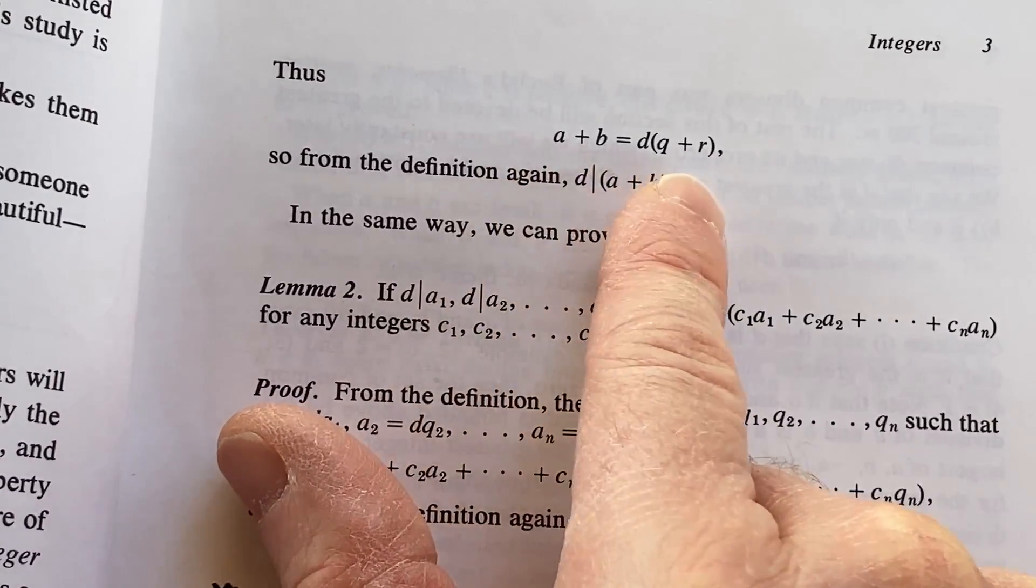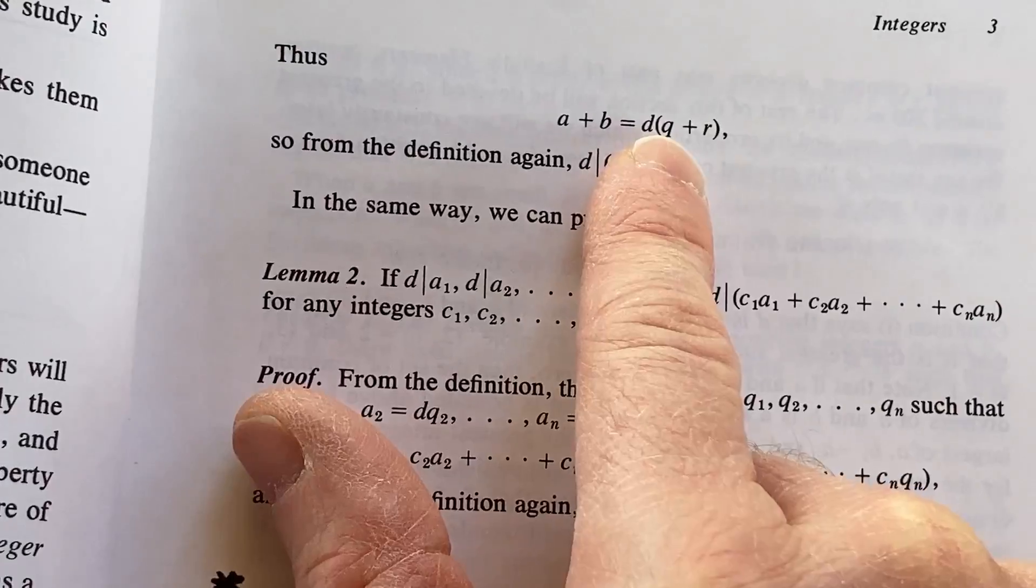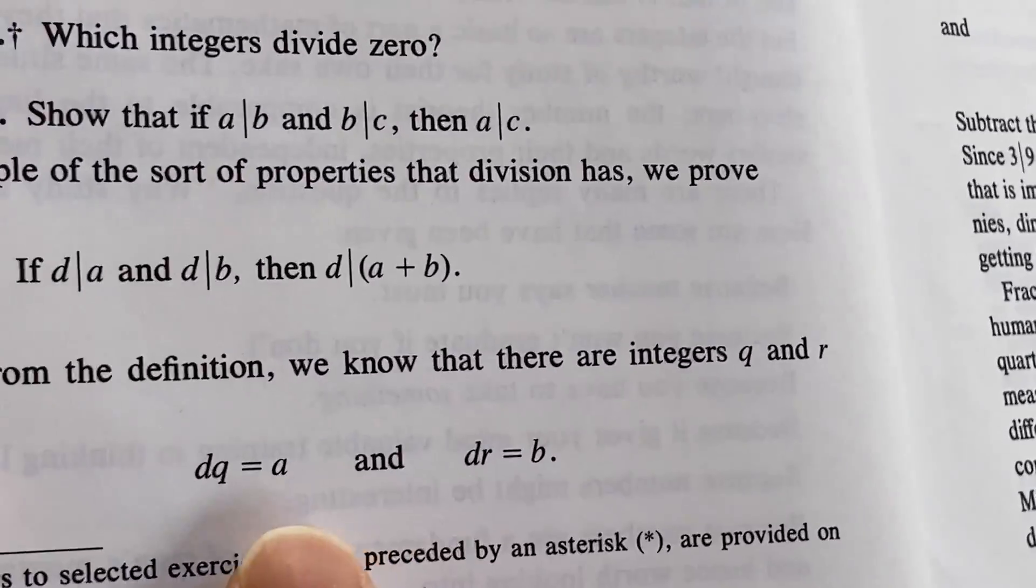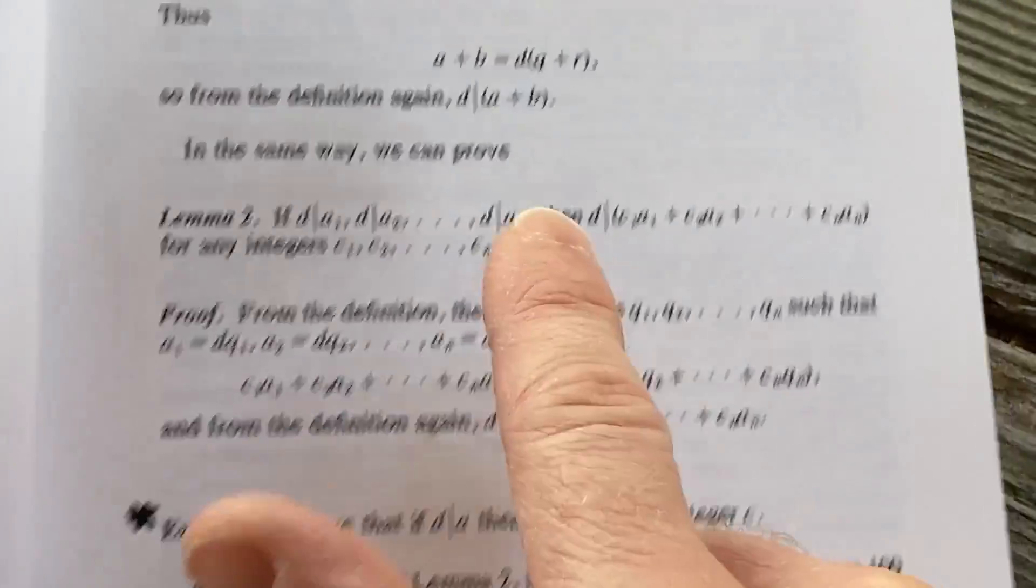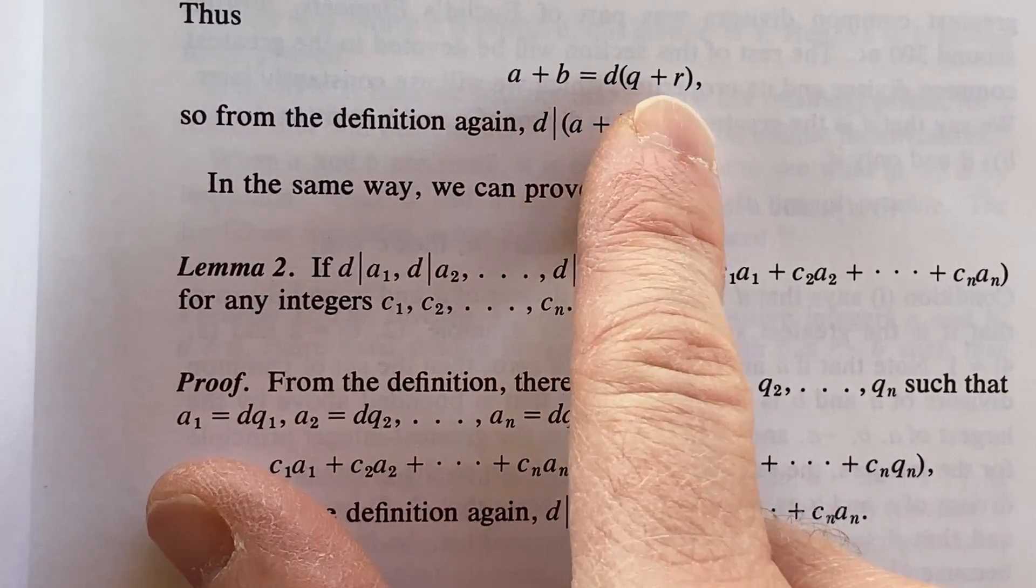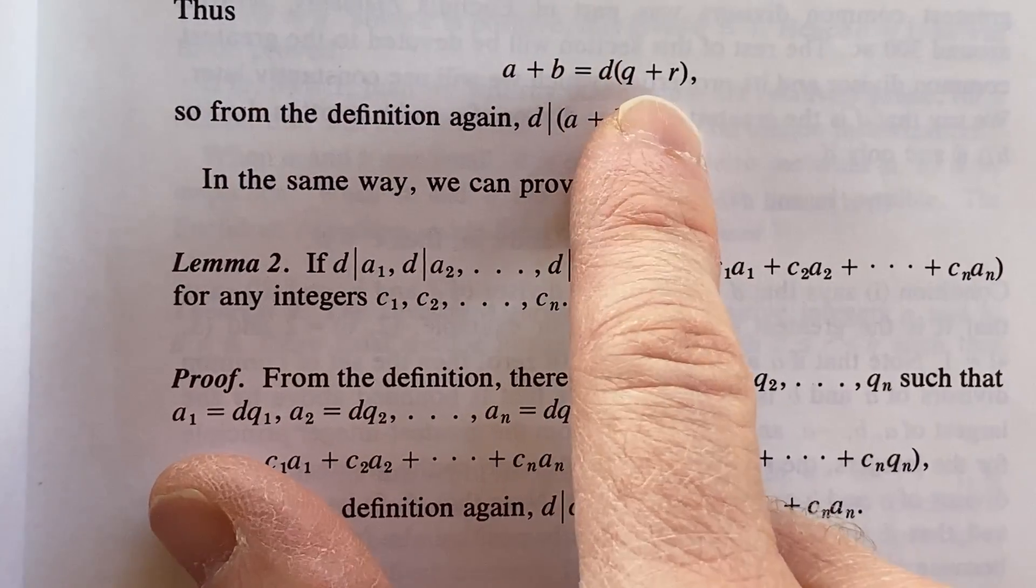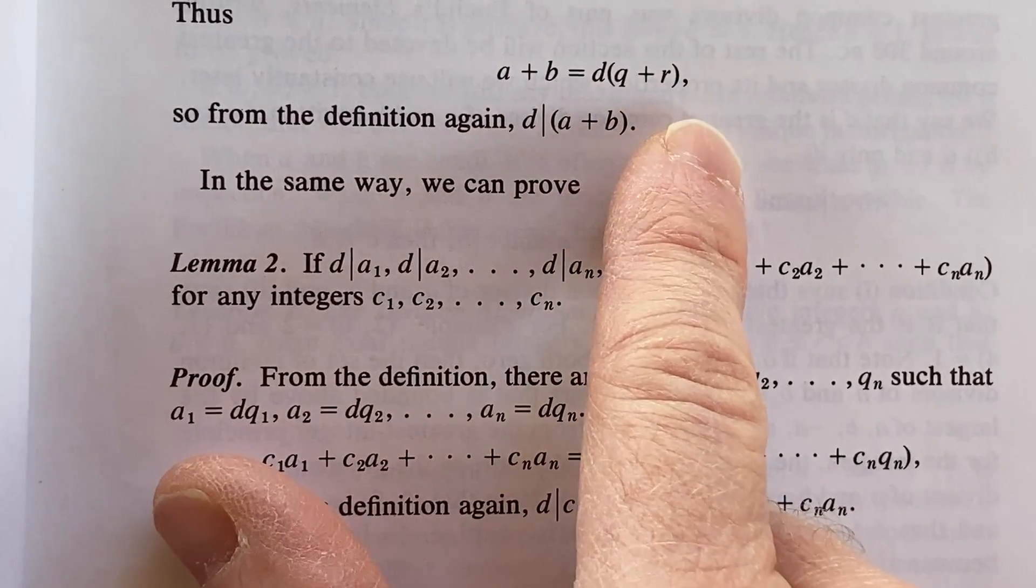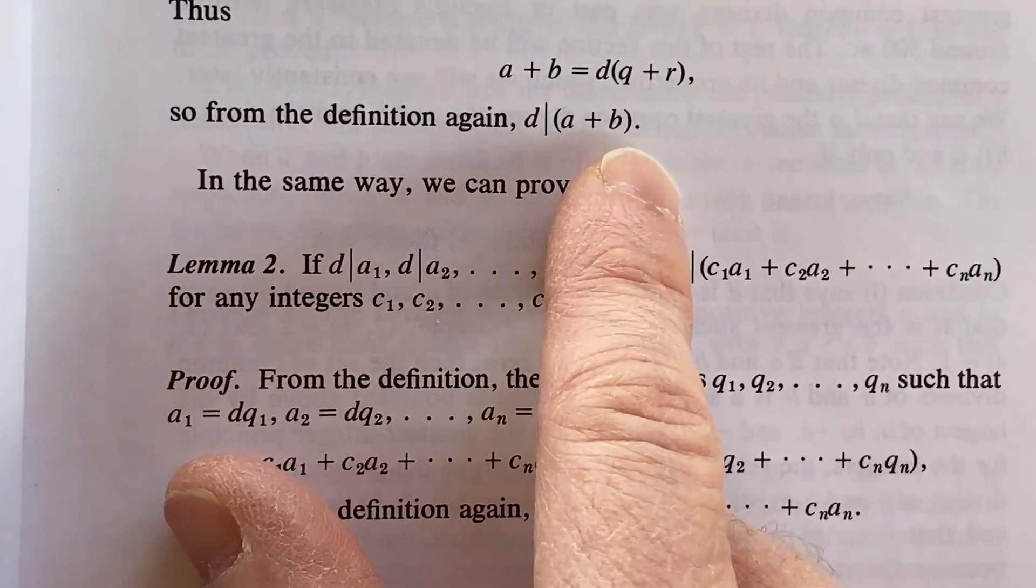Good work, Underwood. You can see he skipped some steps because he factored out the D from the DQ and the DR here. So you see now A plus B is a multiple of D, right, because Q plus R is an integer. So this would mean that D divides A plus B.